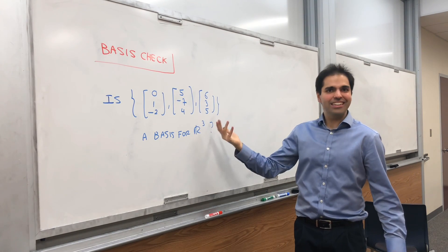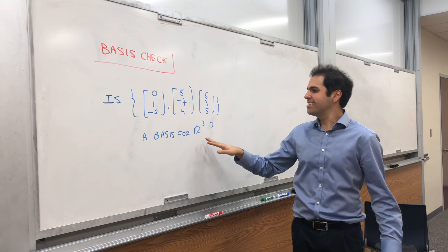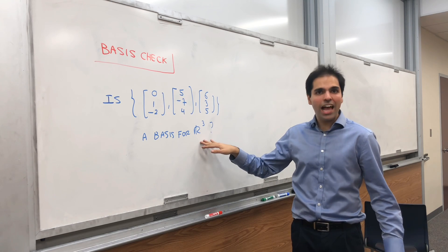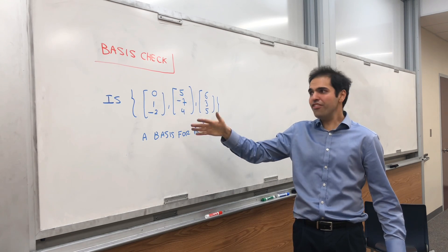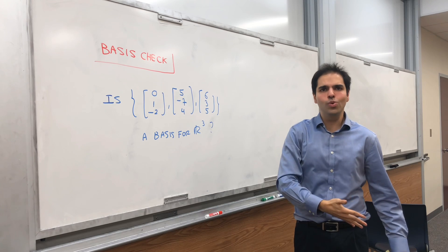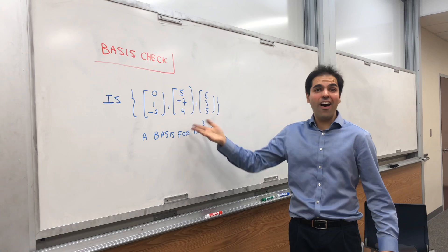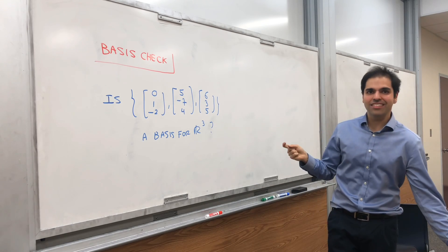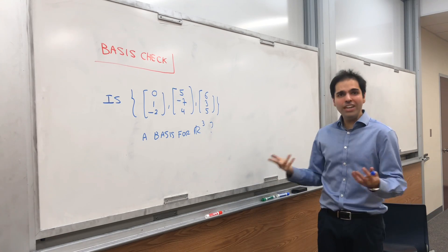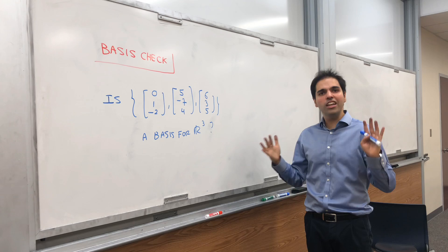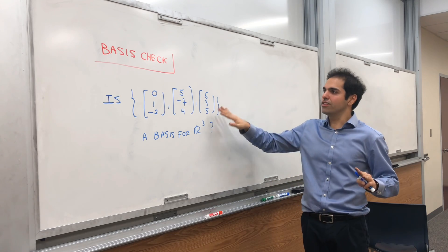First of all, again, this is the beauty of dimensions. R3 is three-dimensional, so if you have a set that only has two vectors or a set that has four vectors or more, then it's automatically not a basis. So for a three-dimensional space, we automatically need three vectors for it to be a basis.